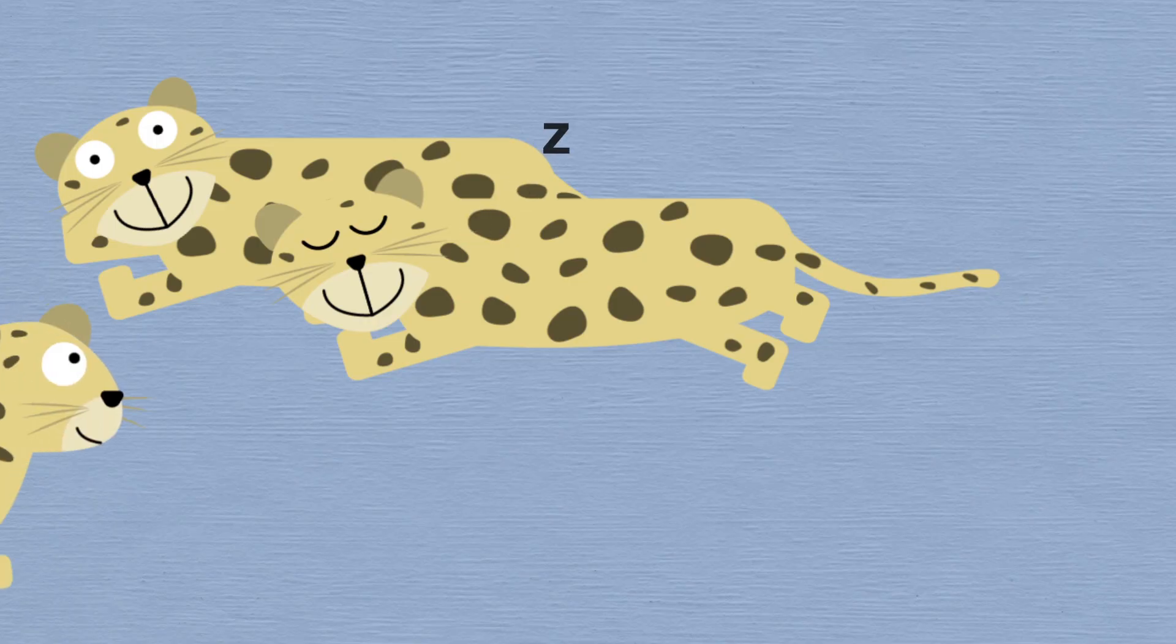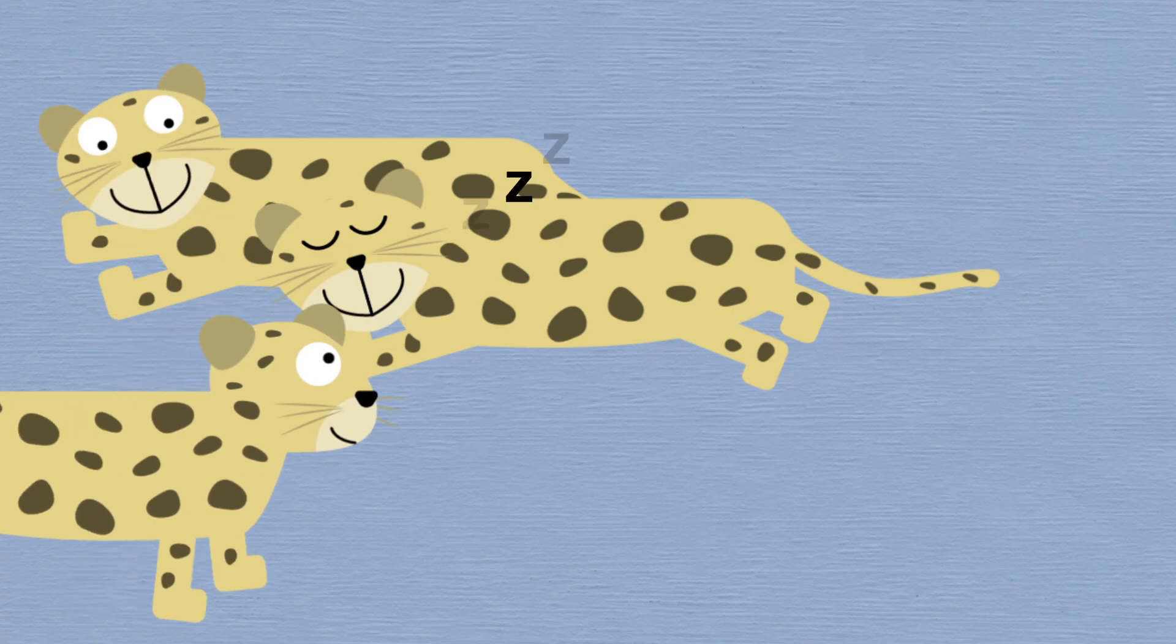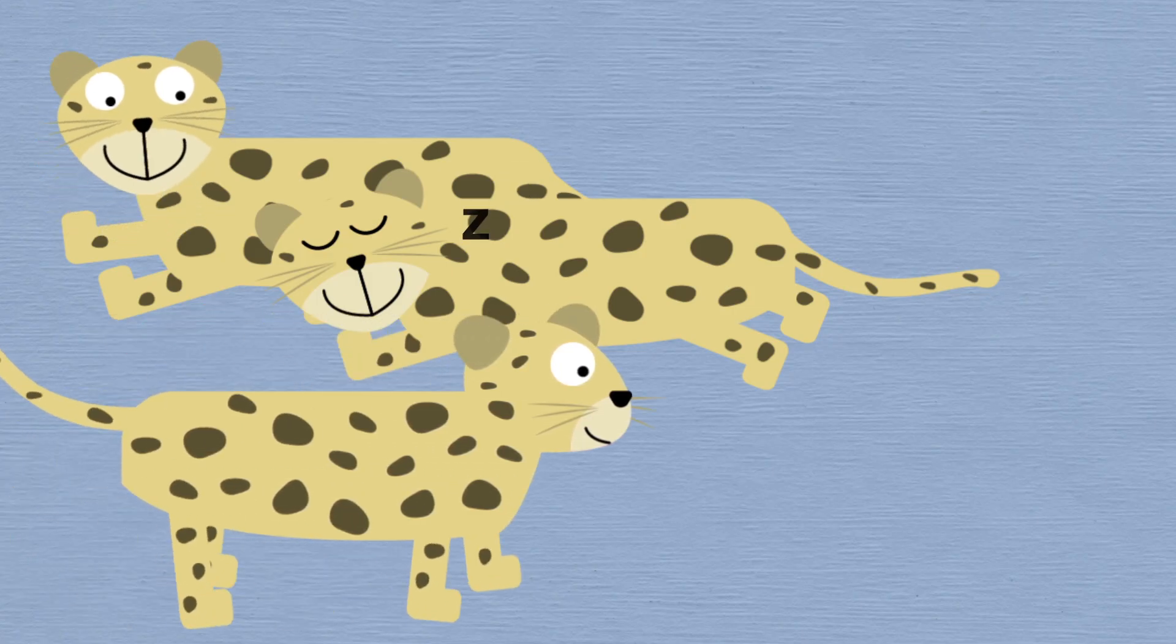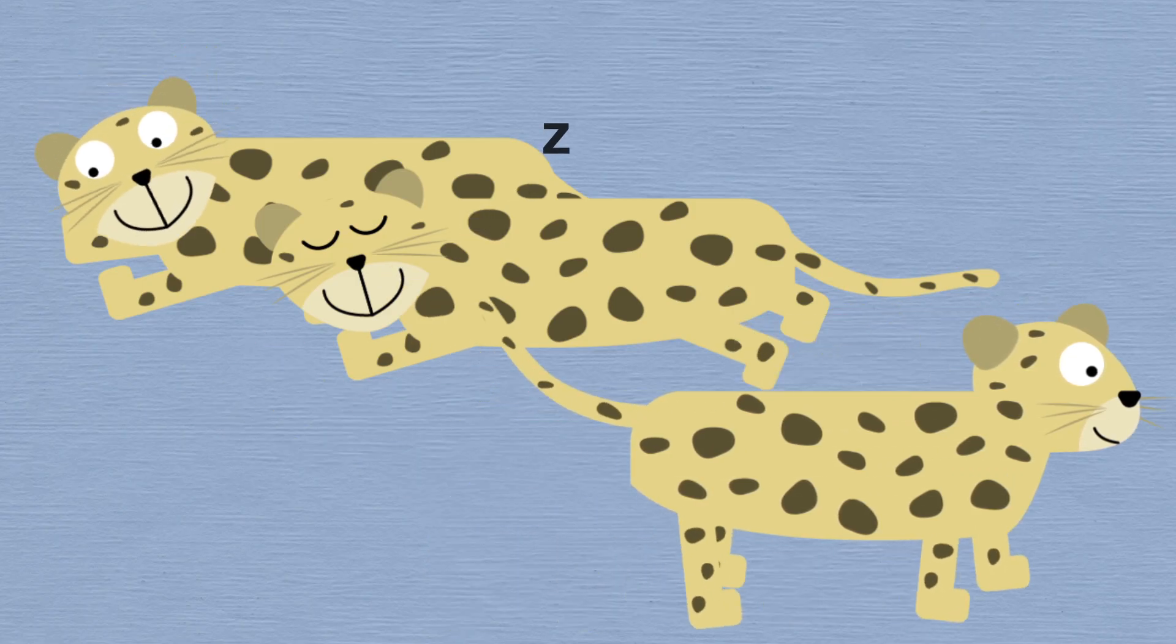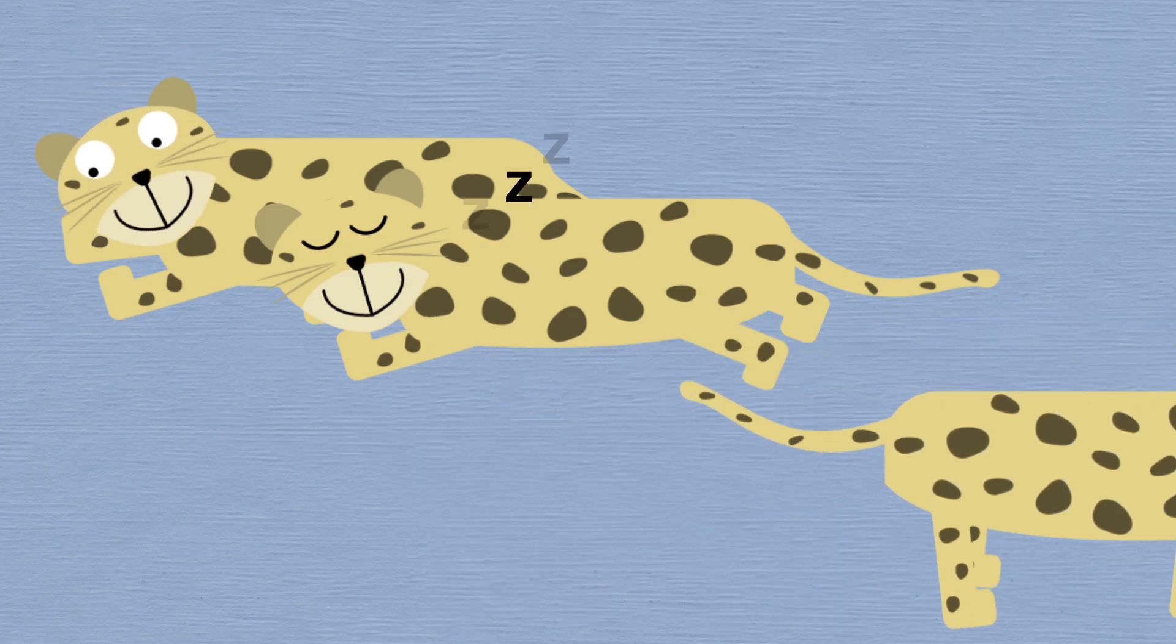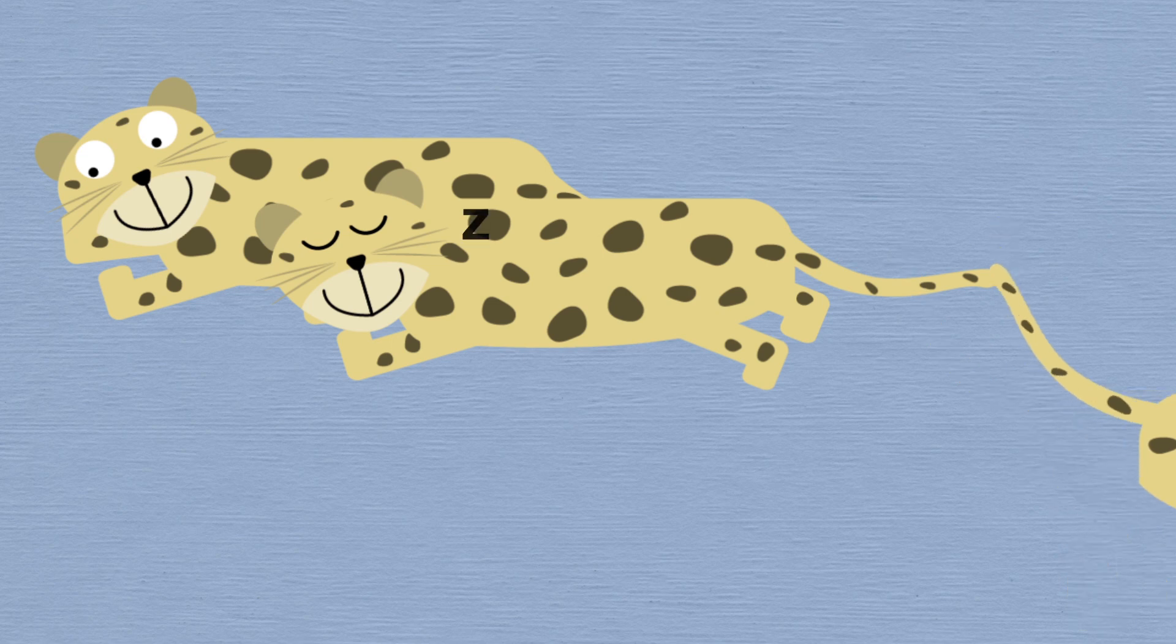Some animals have proved impossible to successfully breed in captivity. Cheetahs would make excellent hunting companions, but attempts to domesticate them have failed due to the fact that in the wild, male cheetahs will chase the female for several days, which just isn't possible inside a caged area.